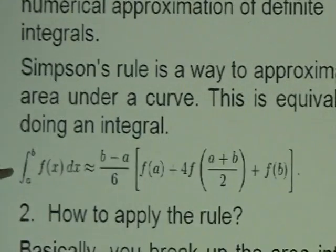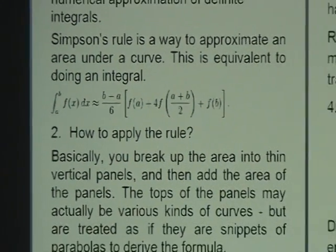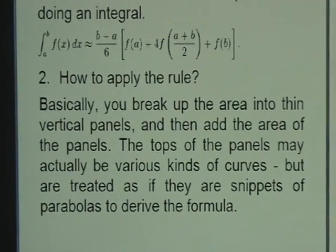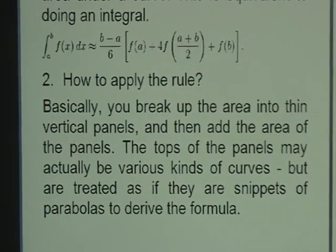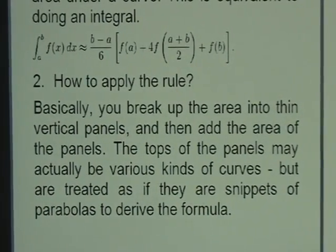So this is the formula for Simpson's rule. How do we apply the rule? Basically, we break up the area into thin vertical panels and add the area of the panels. The top of the panels may actually be various kinds of curves, but are treated as if they are snippets of parabolas to derive the formula.